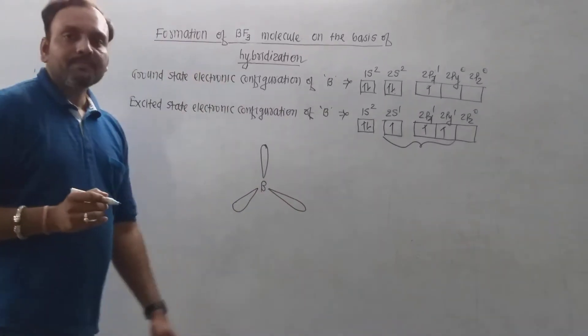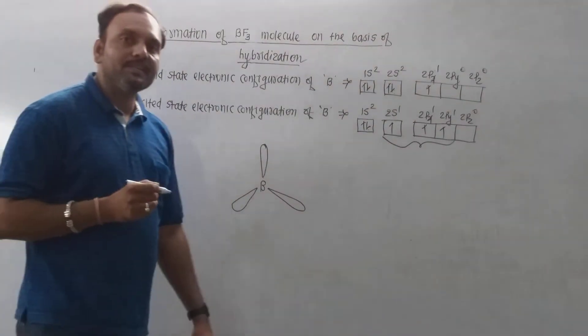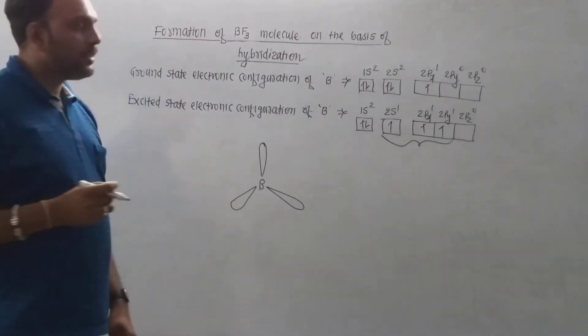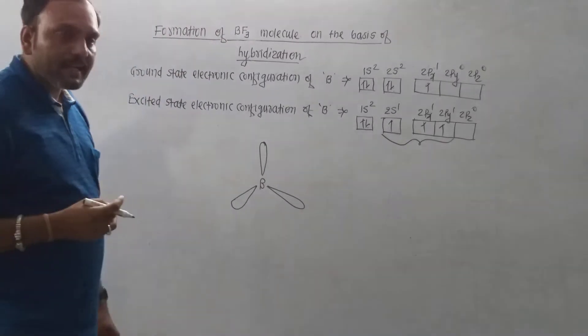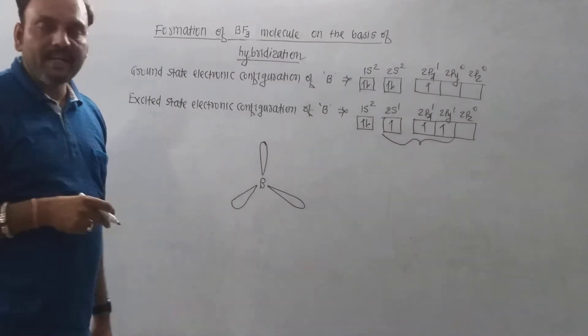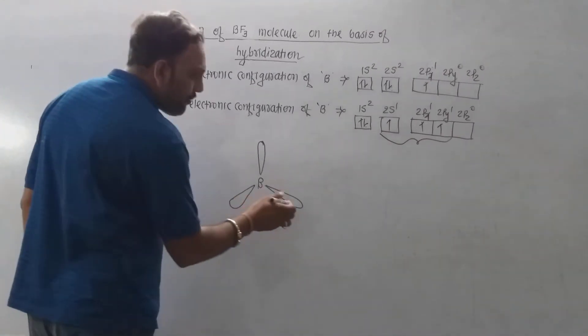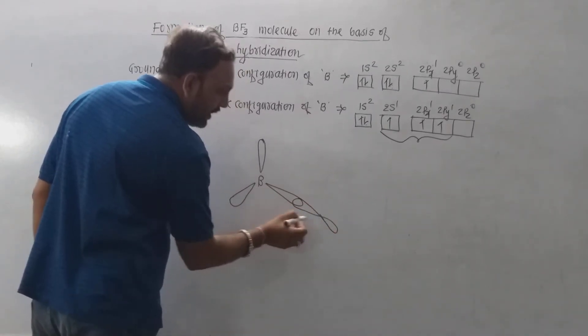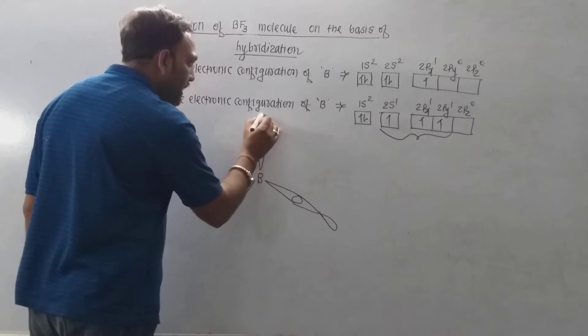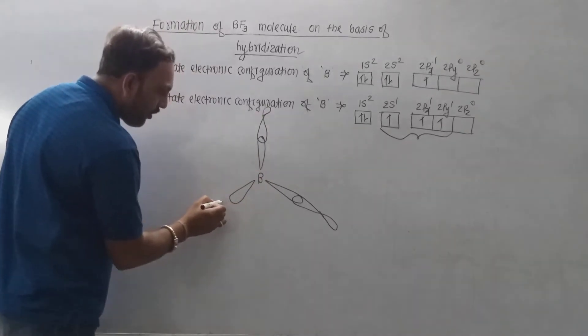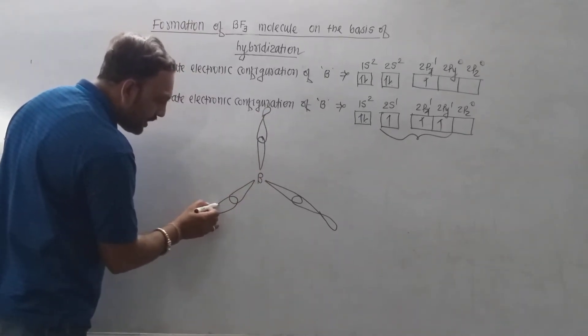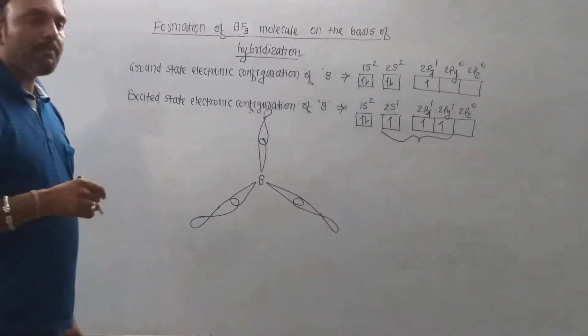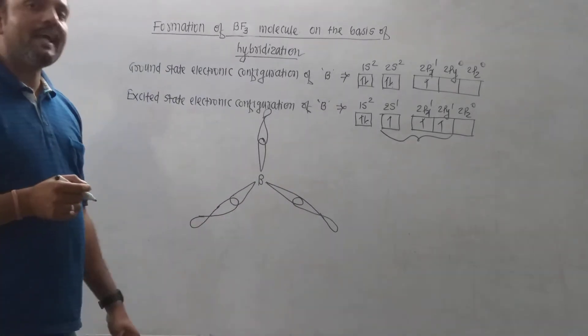Fluorine, having an unpaired electron in the 2pz orbital of the valence shell, comes closer to the boron. Three fluorine atoms with half-filled 2pz orbitals overlap with sp² hybrid orbitals of boron, which leads to the formation of three boron-fluorine bonds and thus the formation of boron trifluoride.